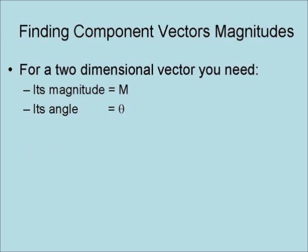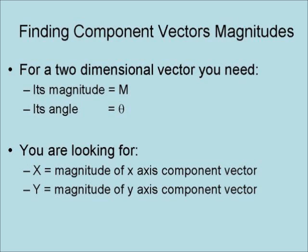Here is how you find the magnitude of the component vectors. For a two-dimensional vector, you need the vector's magnitude, denoted by m, and its angle, denoted by theta. Now you are looking for the magnitude of the x-axis component vector, denoted by x, and the magnitude of the y-axis component vector, denoted by y.